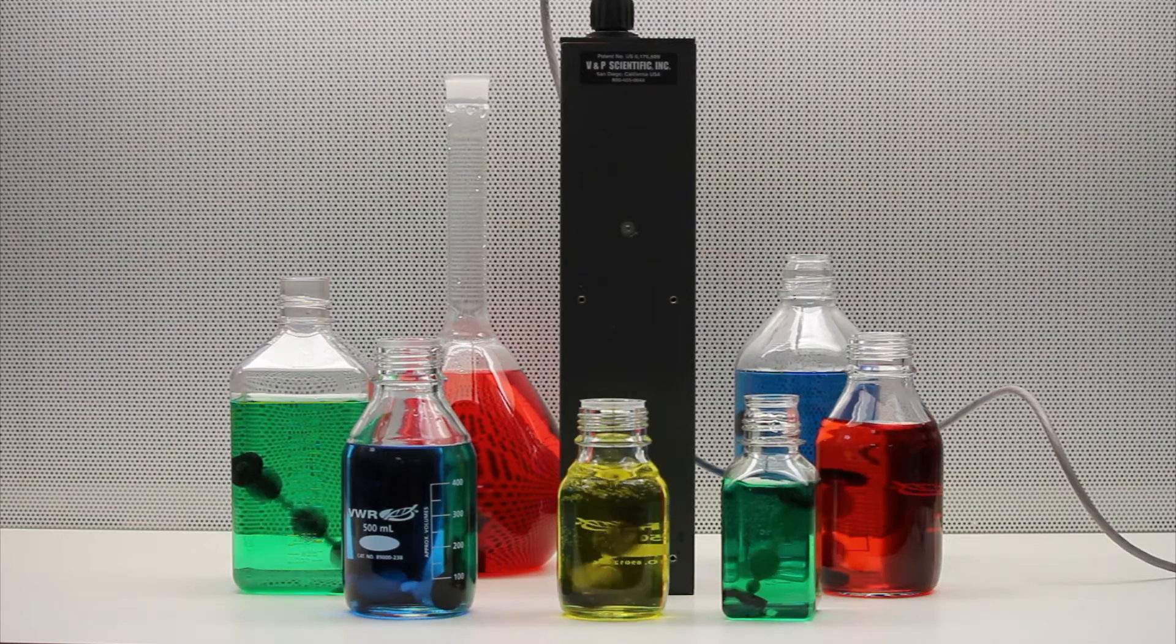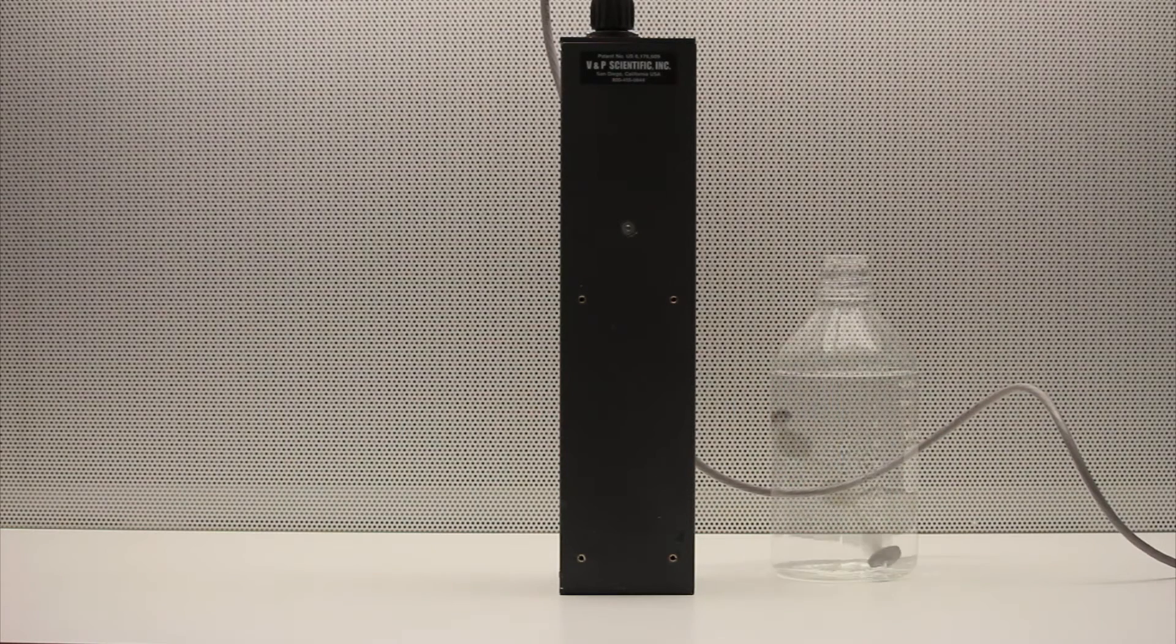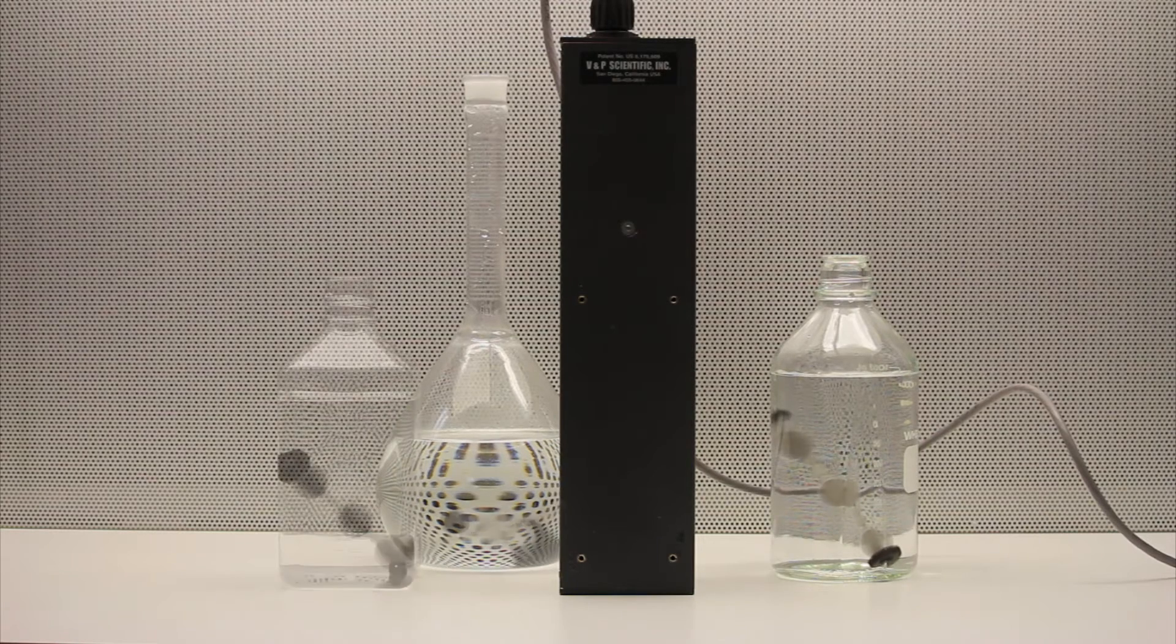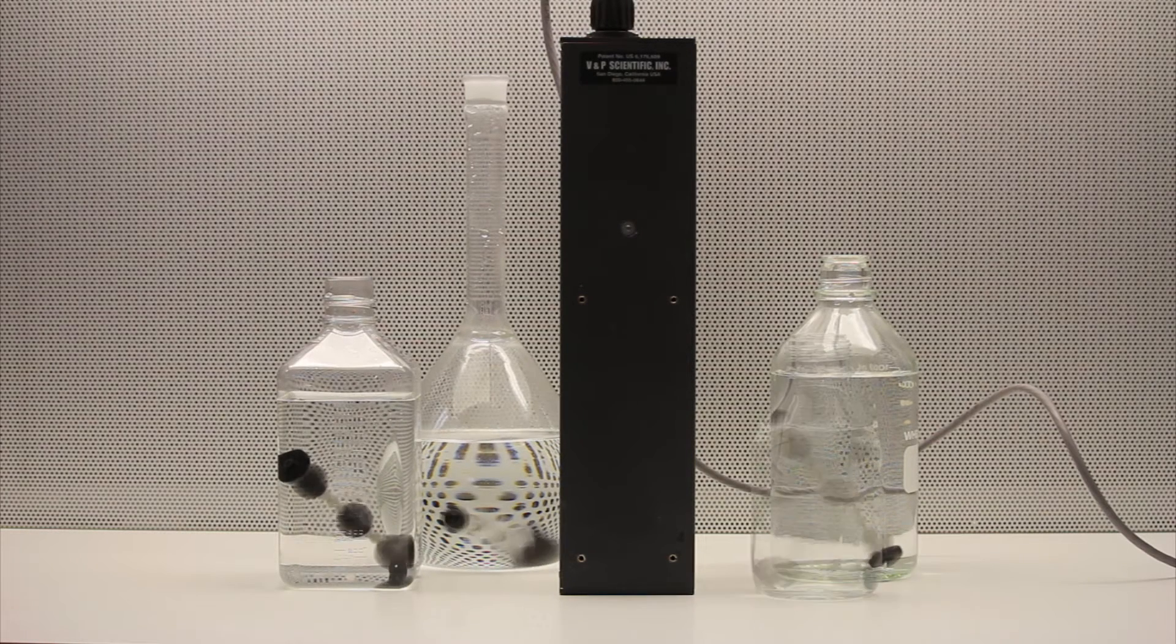BMP Scientific has developed a stirring system to stir multiple bottles at the same time. As you can see, the stirring system allows for multiple bottles, flasks, and beakers to be placed around the stirring device. This will save you time and bench space.